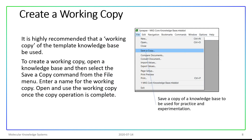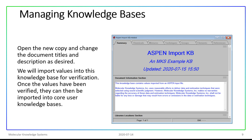Once we download the template knowledge base, we will create a working copy. To create a working copy, we'll use the Save a Copy command from the File menu, give the new file a new name, and then change the document's titles and description as we desire. We will import values into this knowledge base for verification, and only once the values have been verified will we import them into our core knowledge bases.